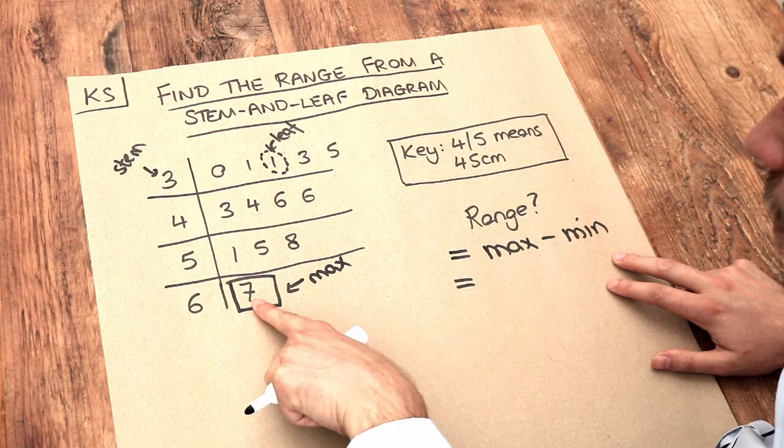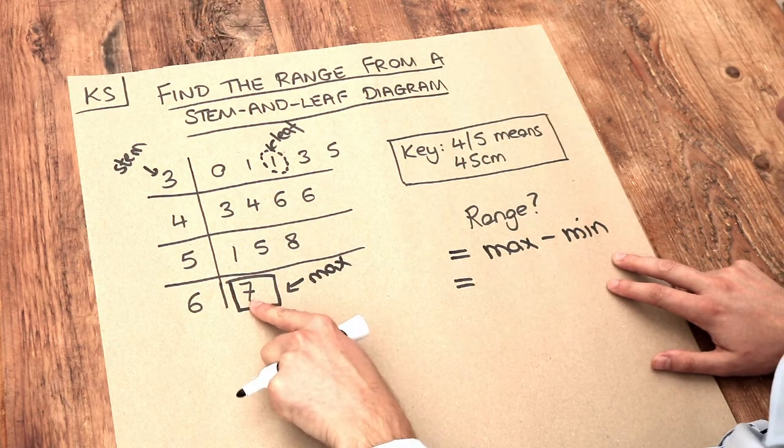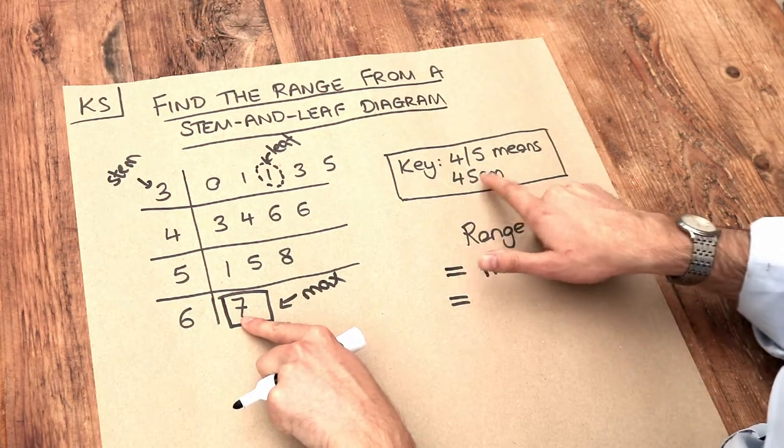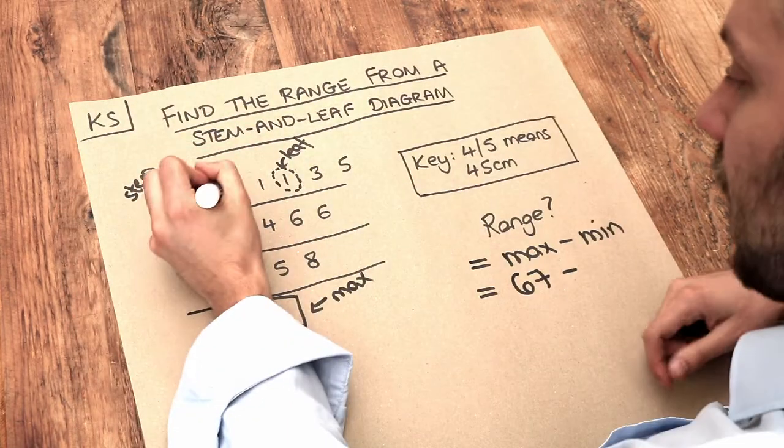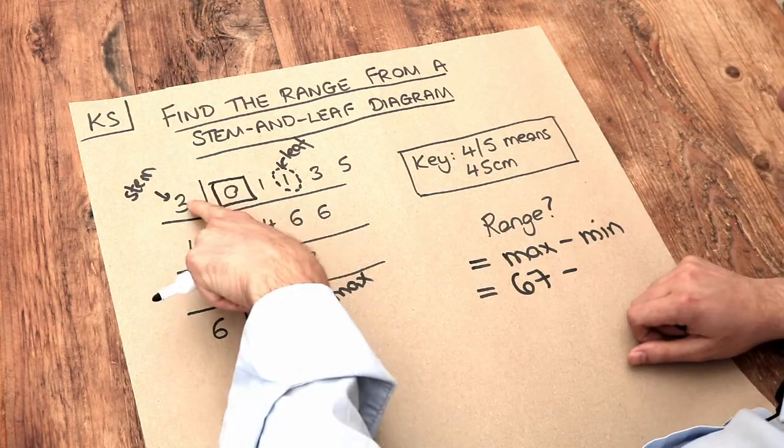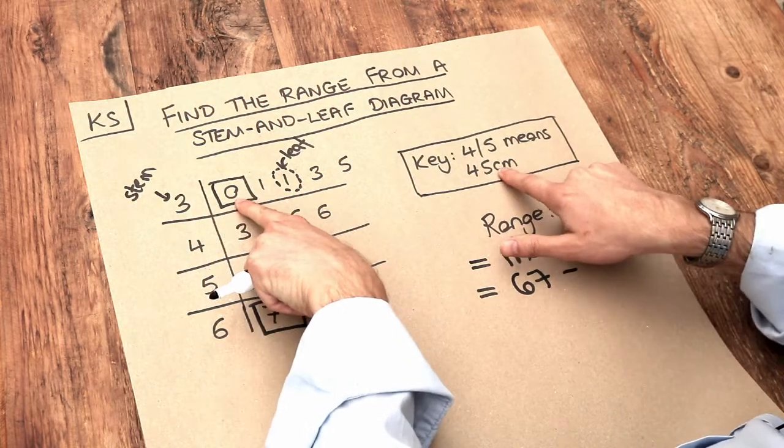We've got six seven, first digit second digit, and that means 67 centimeters. Then we subtract the minimum value, that's here, and that means 30 centimeters.